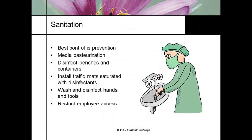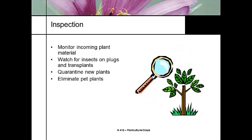Sanitation is probably one of the best control methods that anybody can use in a greenhouse. Sanitation includes a practice of prevention — we all wash our hands. Think about media pasteurization, cleaning the benches, putting disinfectants down with traffic mats, cleaning your tools, and monitoring where your employees are going in and out of your greenhouse.